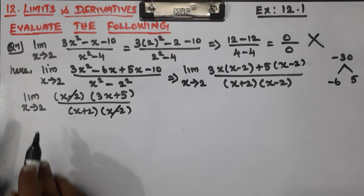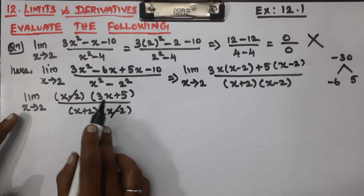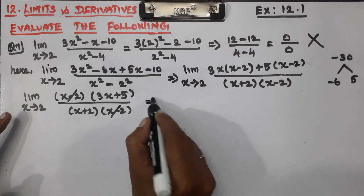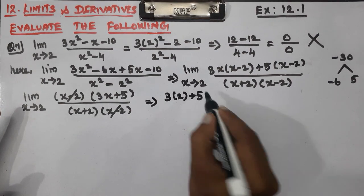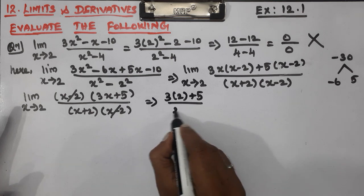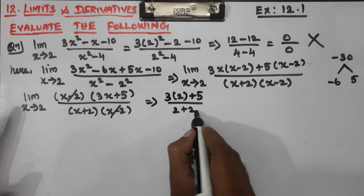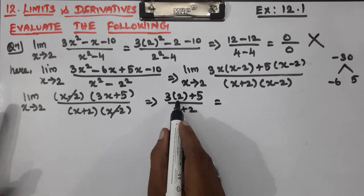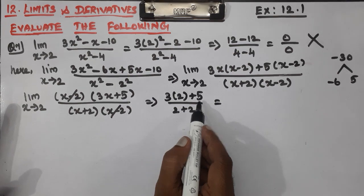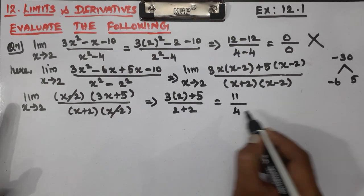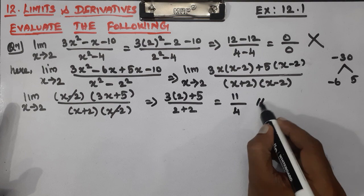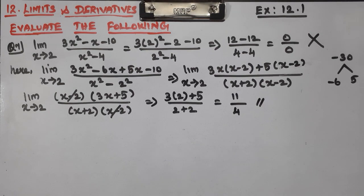Now apply x=2: 3 times 2 plus 5 divided by 2 plus 2. That gives 6 plus 5 = 11, divided by 4. So the answer is 11 by 4. The 0 by 0 form is resolved. Clear.